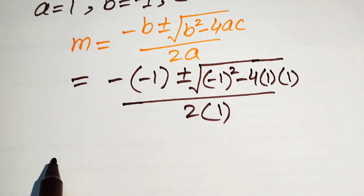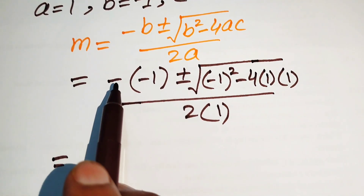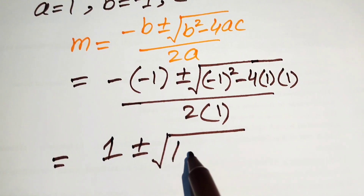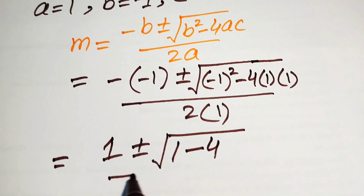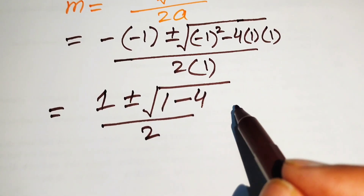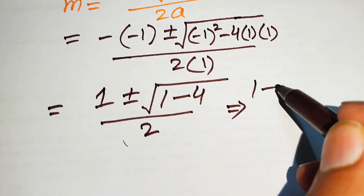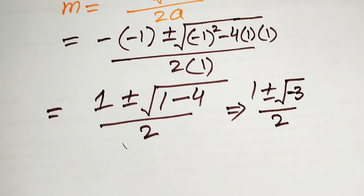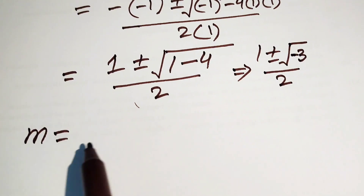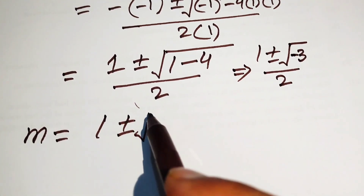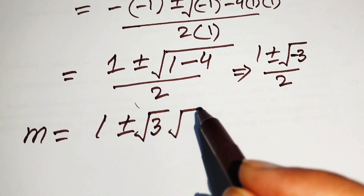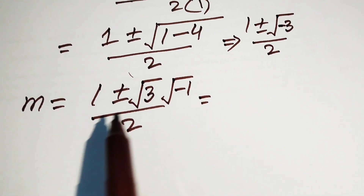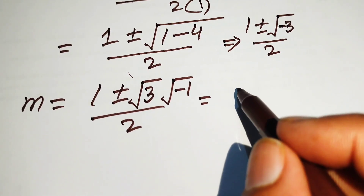Simplifying: minus times minus becomes plus 1, and under the square root, (minus 1) squared is plus 1, and minus 4 times 1 gives minus 4, all divided by 2. So we have 1 plus or minus square root of 1 minus 4, which is square root of minus 3, divided by 2. We separate out the square root of minus 1, and since square root of minus 1 equals iota.